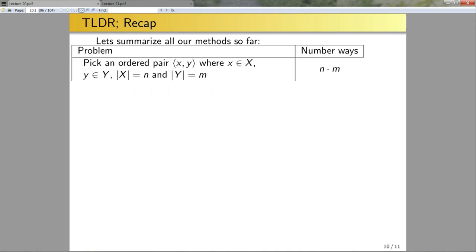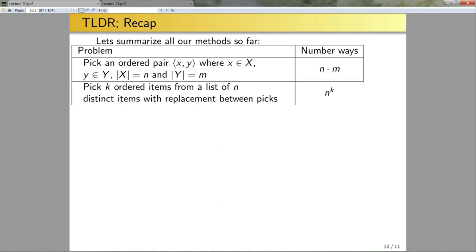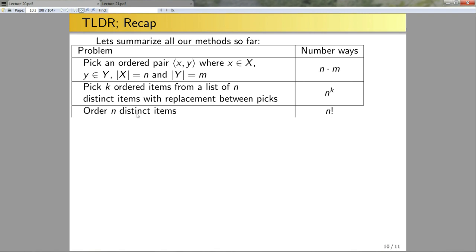If I pick an ordered pair (x, y) where x comes from set X with cardinality m and y from set Y with cardinality n, the number of ways is m × n — and when X equals Y, this is my ordered-with-replacement problem. If I pick k ordered items from n indistinct items with replacement, there are n^k ways — the ordered-with-replacement problem. And ordering n indistinct items is a permutation: n! ways.